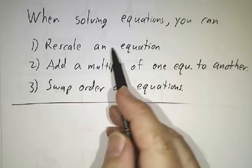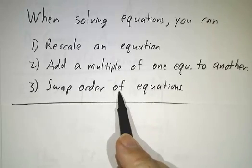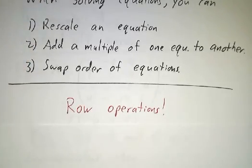So if you rescale a row, or you add a multiple of a row to another, or you swap the order of rows, that doesn't change the answers. Those are exactly our row operations. So whenever you do a row operation, you don't change the answers to the system of equations.